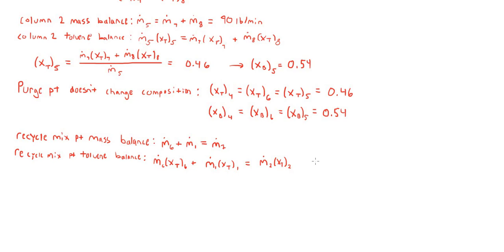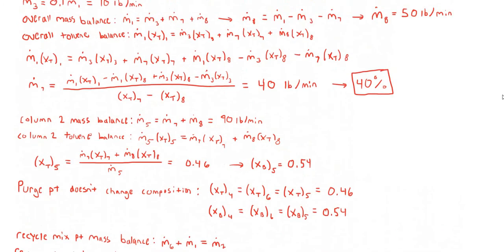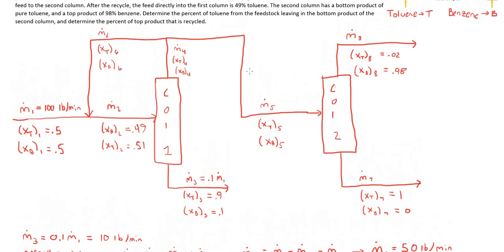Since the recycle mix point mass balance gave us an equation explicitly for M.2 in terms of M.6, we're going to plug the expression for M.2 into the recycle mix point's toluene balance. Rearranging and solving for M.6, you get that the recycle flow rate is 33.3 pounds per minute. We know the recycle mass flow rate, but we need to know the percent of the mass leaving the top product of column 1 that's being recycled. So we still need to calculate M.4, using a mass balance around the split point since we already know M.5 and M.6.